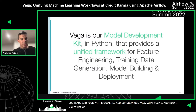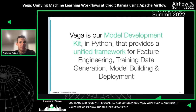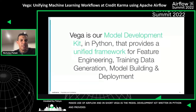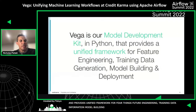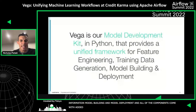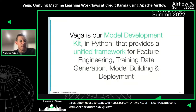My objective here is to give you an overview of what exactly Vega is and how it relates to and makes use of Airflow. In short, Vega is our model development kit. It's written in Python. It provides a unified framework for four things: feature engineering, training data generation, model building, and model deployment. All of these components come with added features like data quality, centralized metadata, and continuous model refreshing, which Raj will get into quite a bit towards the end of the talk.